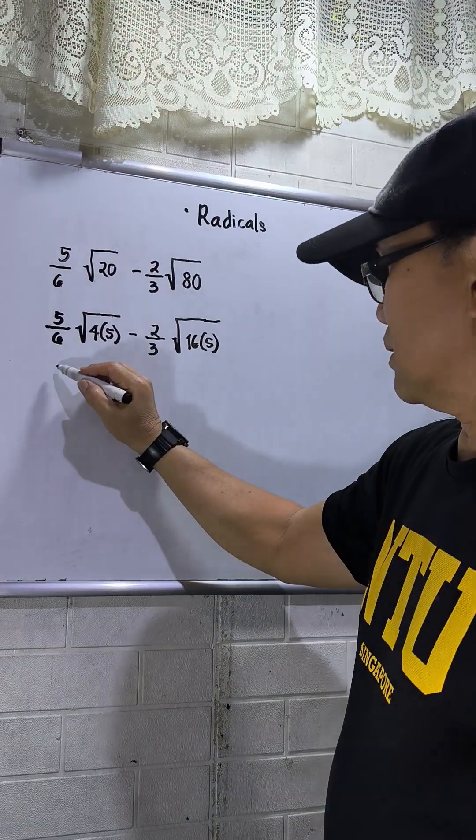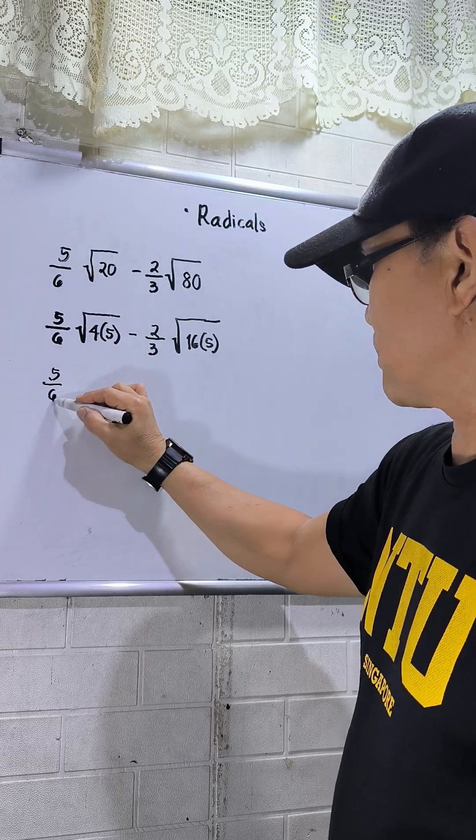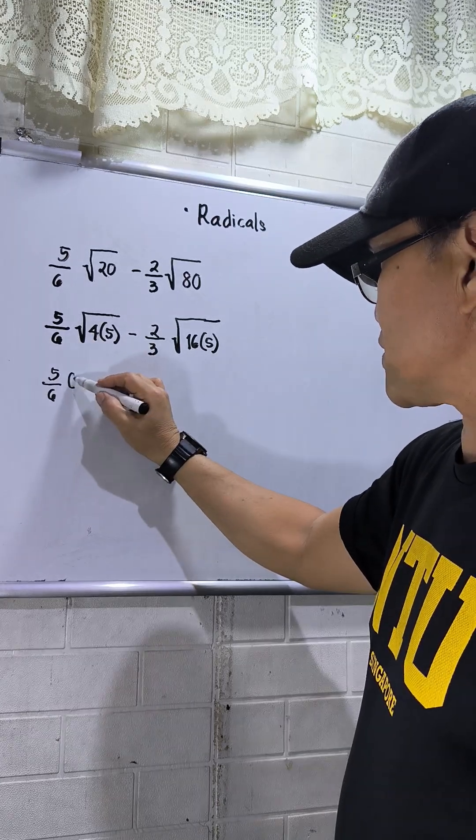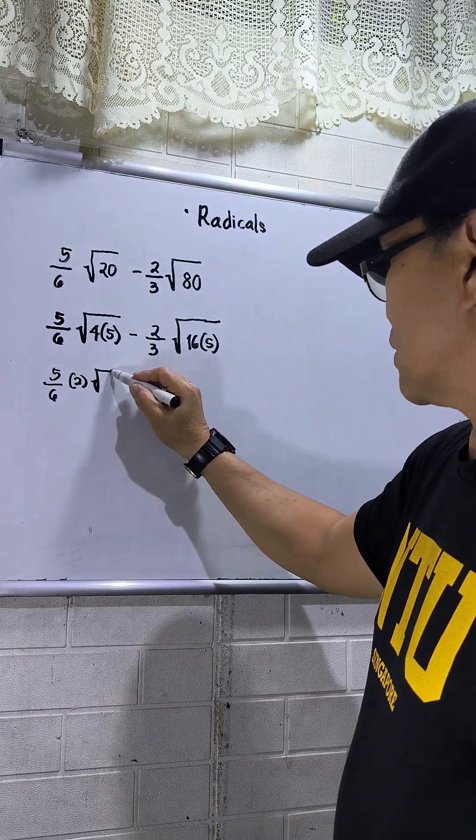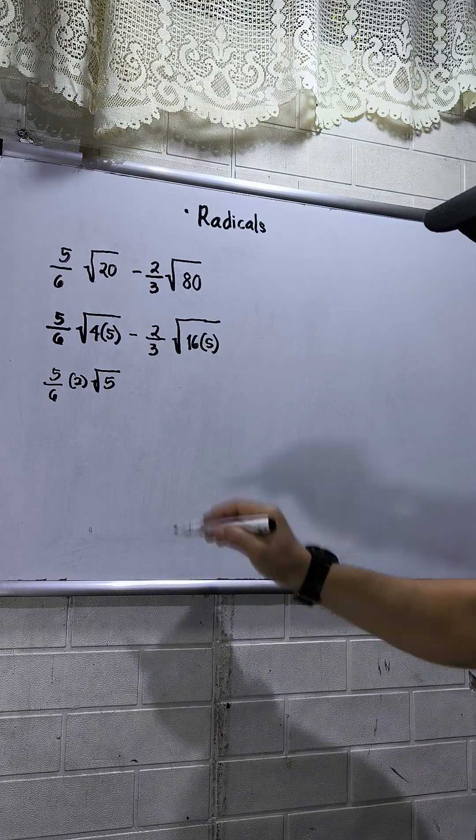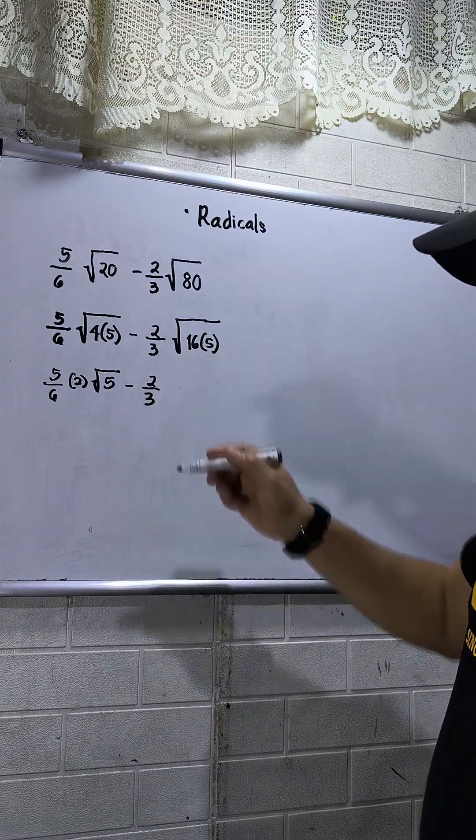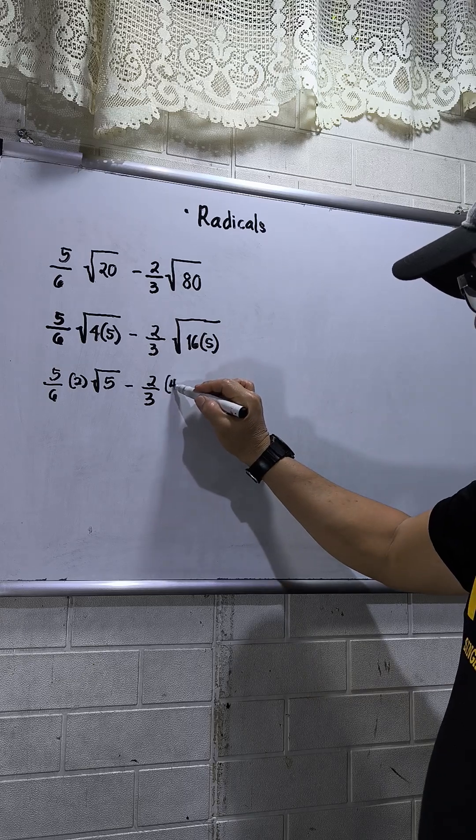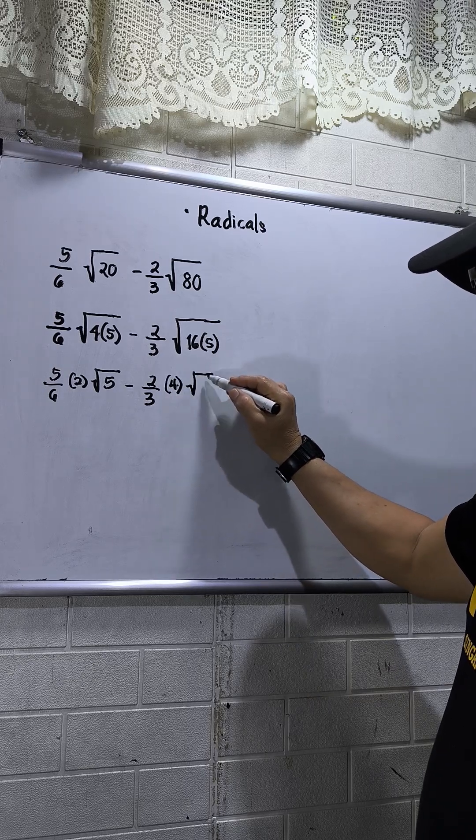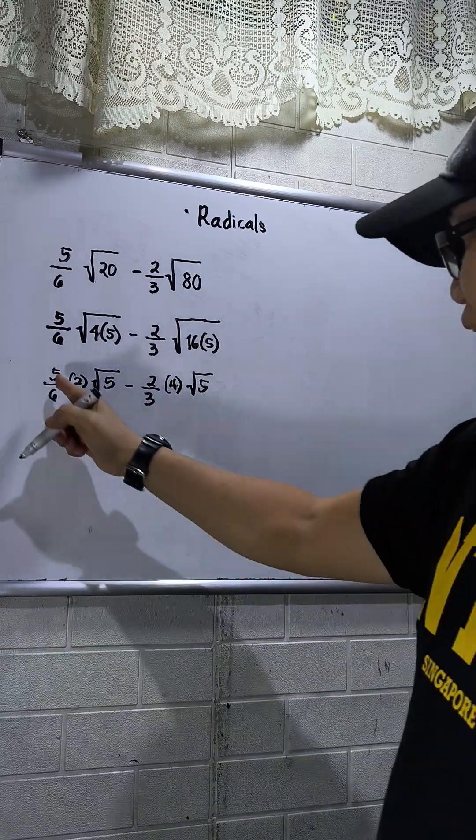Then this will be 5 over 6 square root of 4, that is 2, then square root of 5. Then minus 2 over 3 square root of 16, that will be 4, then square root of 5.